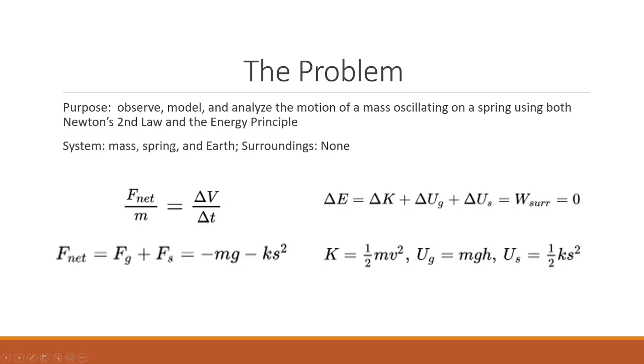In this lab, we have the system being the mass, the spring, and the Earth, giving us delta E equals change in kinetic energy plus change in potential gravitational energy plus change in spring potential energy.